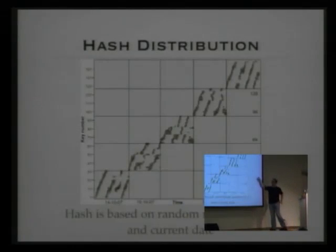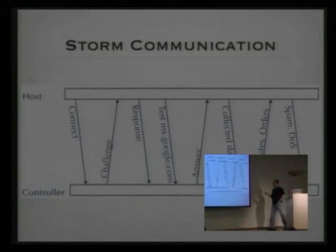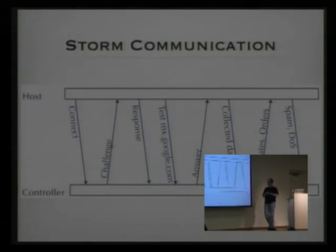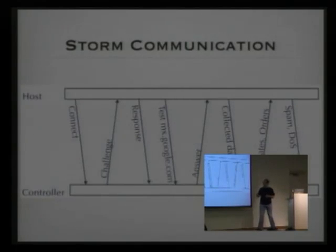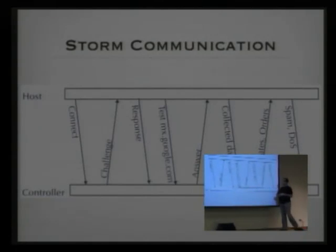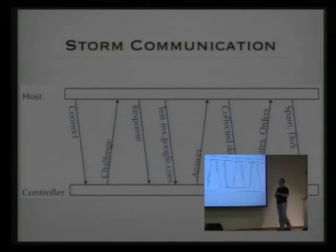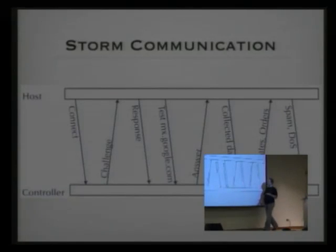There are actually only 32 hashes each day. The Storm worm communication works in such a way that once the Storm worm searches for those hashes, it receives as an answer some information on which IP and port it should contact. It then contacts the specific controller IP, and in the first step there is a simple challenge and response so that the host has to prove that it is a valid node — that it is also infected.